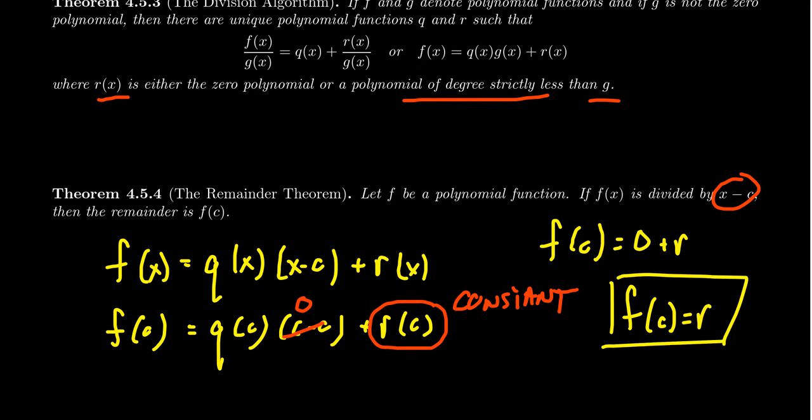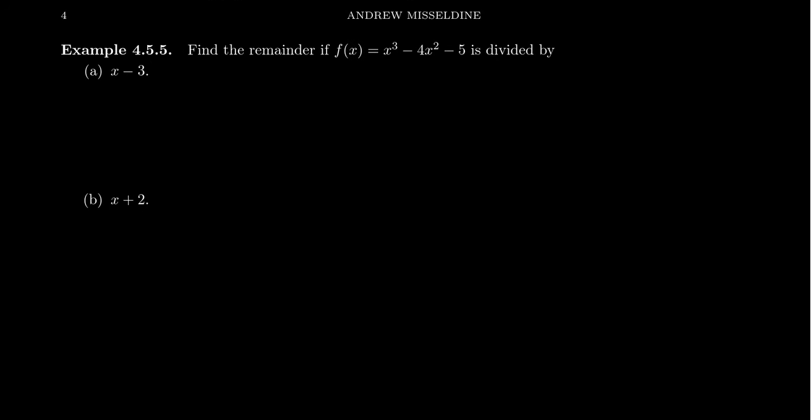It's a consequence of the division algorithm that if you evaluate the function at the number c, that's the same thing as dividing it by x minus c if you just want the remainder. It doesn't tell you the quotient, but it tells you the remainder. Why is this relevant? Well, because if you divide by x minus c and the remainder were zero, that means that x minus c is a divisor of f, and I actually found one of the roots of the polynomial. That's going to be a critical step here.